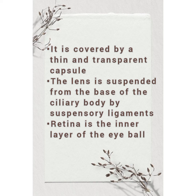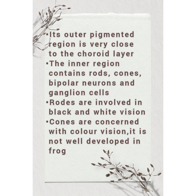The retina is the inner layer of the eyeball. Its outer pigmented region is very close to the choroid layer. The inner region contains rods, cones, bipolar neurons, and ganglion cells. Rods are involved in black and white vision. Cones are concerned with colour vision, which is not well developed in frog.